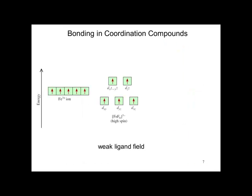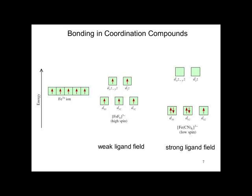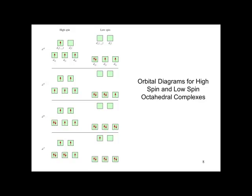Shown here is the iron-3+ ion, and then iron with 6 fluorines, which forms a high-spin complex. Because of the weak ligand field, the d-orbitals are close in energy, so they populate according to Hund's rule. With cyanide — 6 cyanides — this is a strong ligand field with a big energy difference between the lower and upper d-levels, and we violate Hund's rule: we put electrons in the lower orbitals first and, if forced to, the upper ones. These are the orbital diagrams for high-spin and low-spin octahedral complexes.